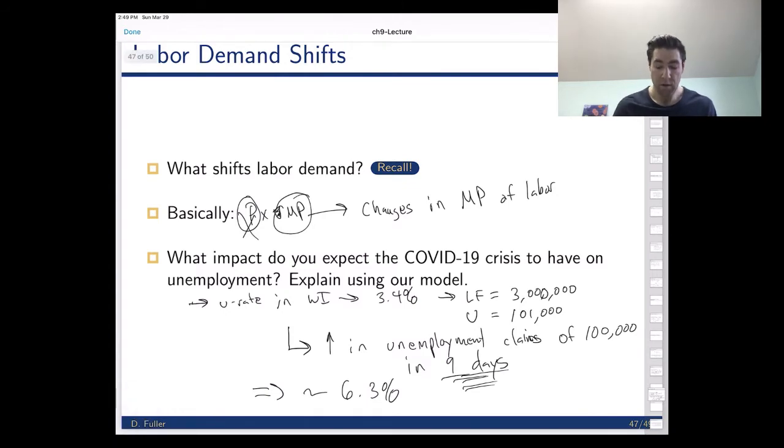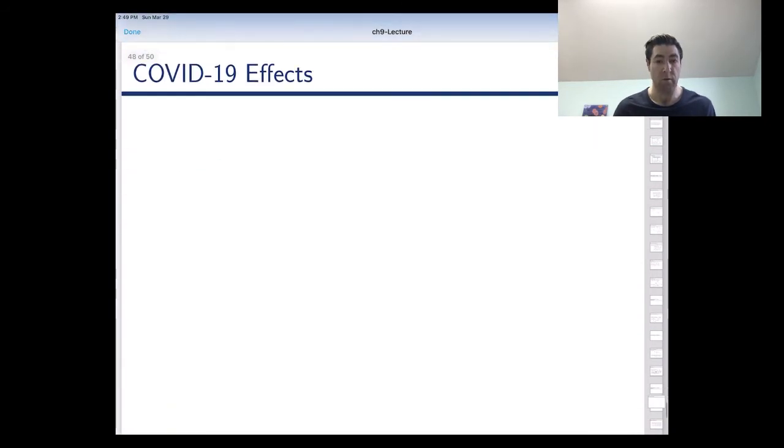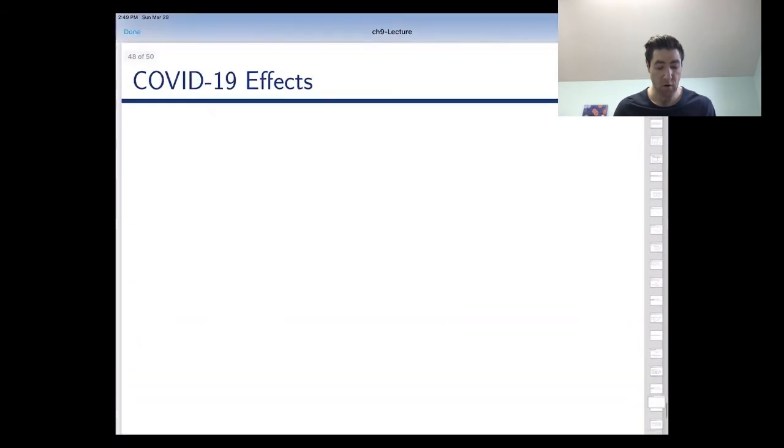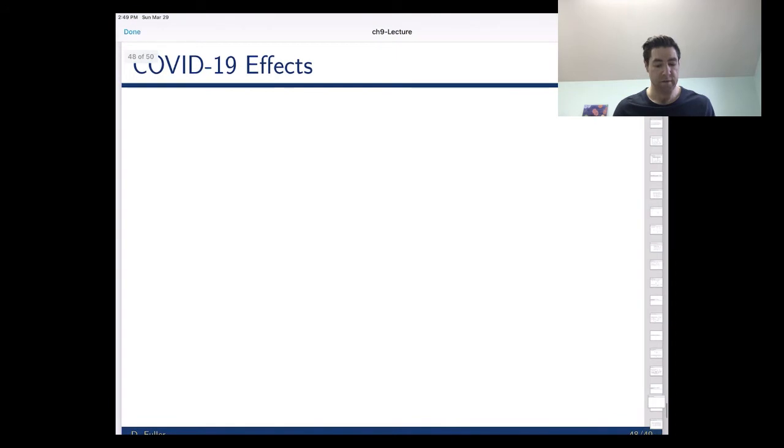So what explains that increase in unemployment? Well our model is set up well to help us understand that. So what are the effects of this COVID-19 disaster? One, we know in terms of labor demand, the marginal product of labor is obviously going to go way down.